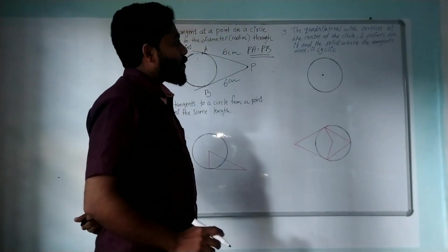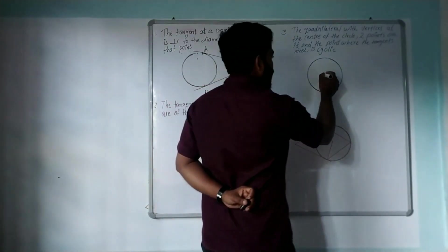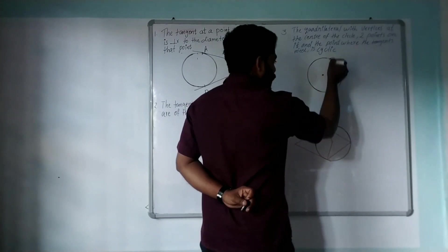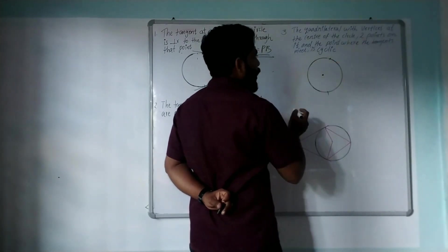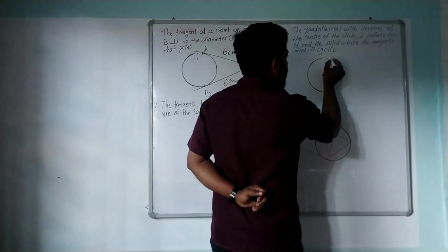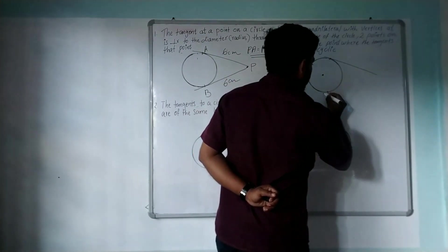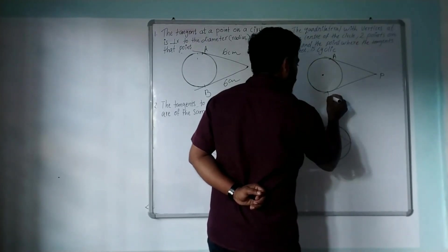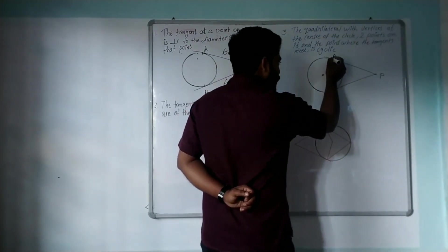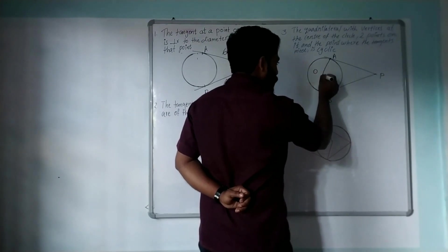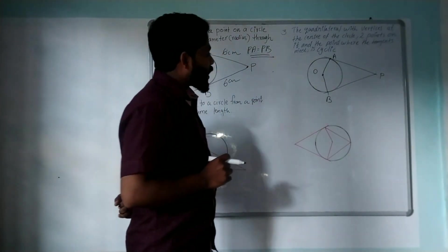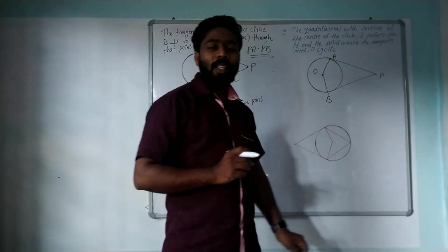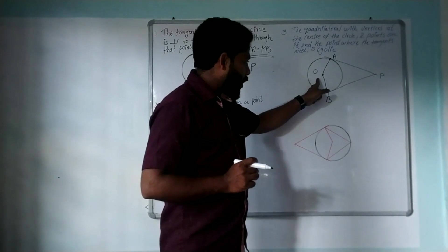The quadrilateral with vertices at the center of the circle — the vertices are the center of the circle. That circle has two points on each side and the point where the tangents meet. The tangents meet at that point. So on each side it is a cyclic quadrilateral.